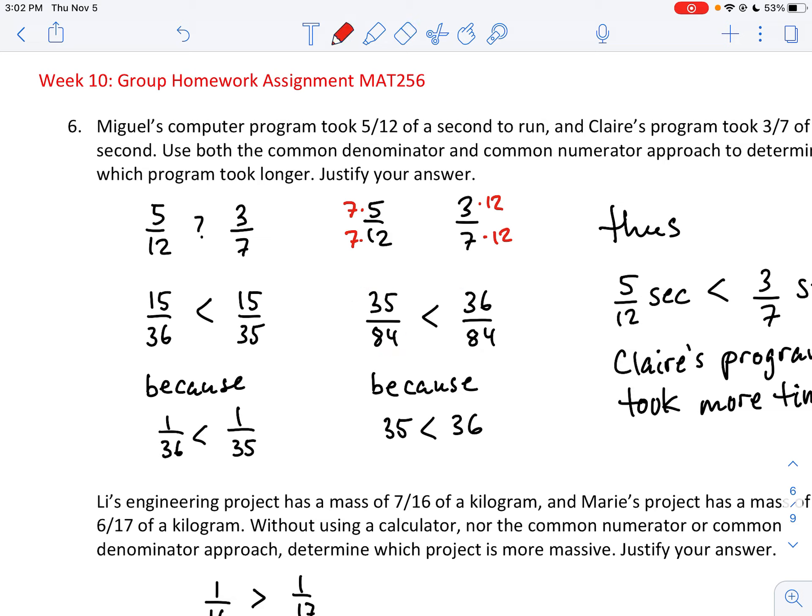Once you have the same denominator, then you can just compare the numerators because one 84th of a second is the same. So if you have 36 of them compared to only 35 of them, then 36 of these equal, of these same size pieces is more than 35 of those same pieces. For the common numerator approach, I multiplied the first fraction by three over three, essentially multiply the top and bottom each by three. And over here, I multiplied the top and bottom each by five.